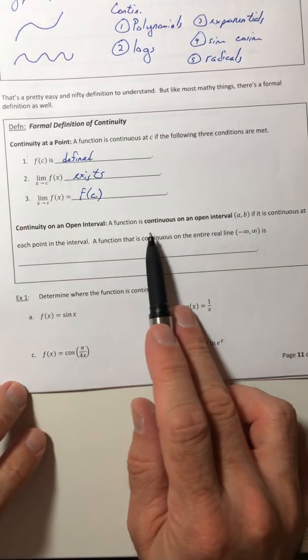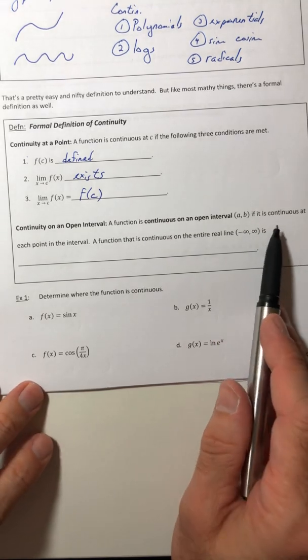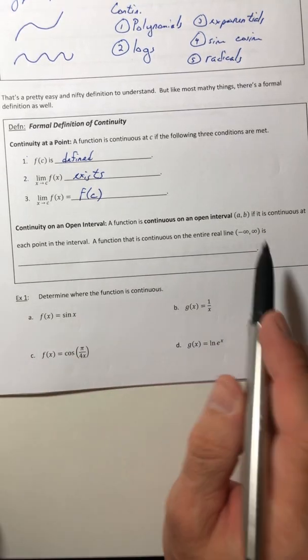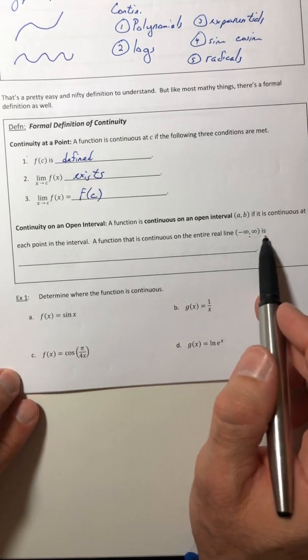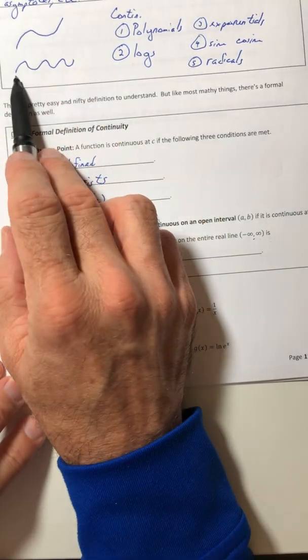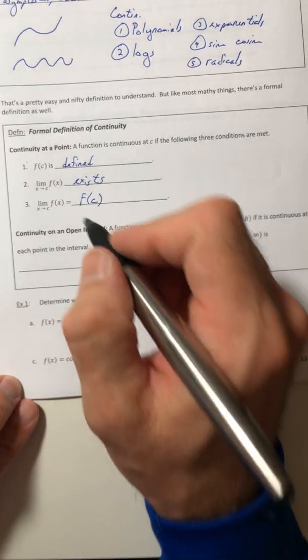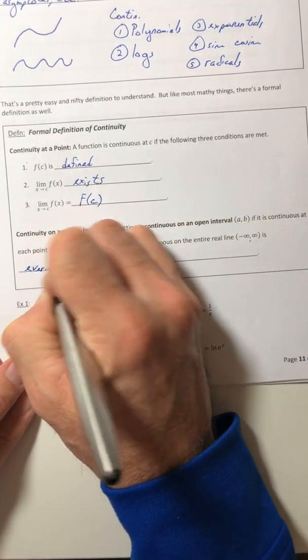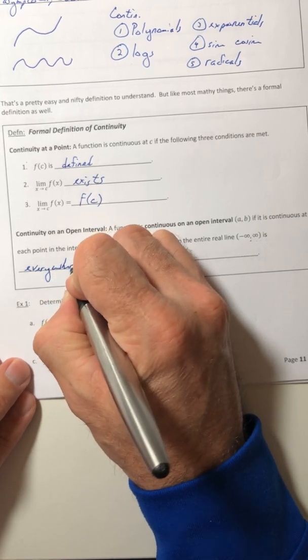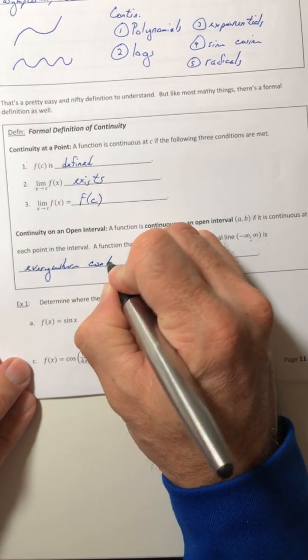Now it's continuous on an open interval if it's continuous everywhere at each point in the interval. And if it's continuous on the entire real line, like a polynomial, the sine and cosine curves, that is said to be everywhere continuous.